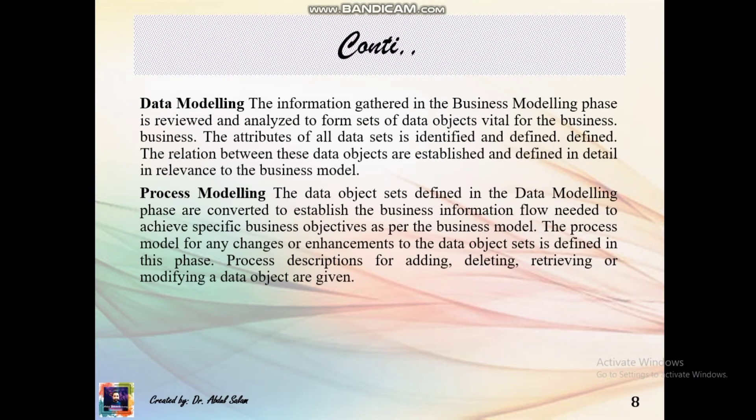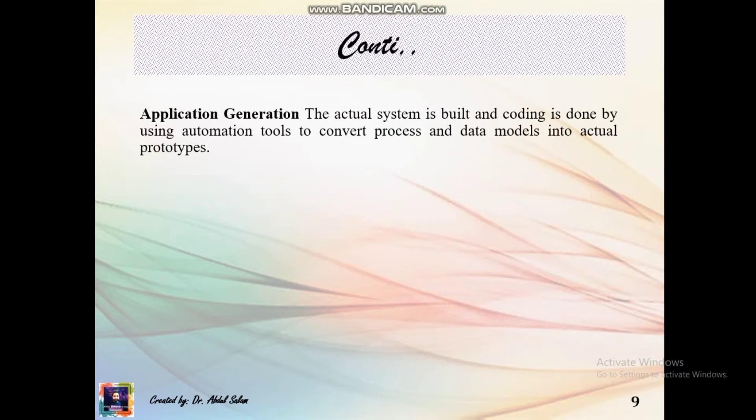Data Modeling: the information gathered in the business modeling phase is reviewed and analyzed to form sets of data objects vital for the business. Process Modeling: the data object sets designed in the data modeling phase are converted to establish the business information flow needed to achieve specific business objectives as per the business model.